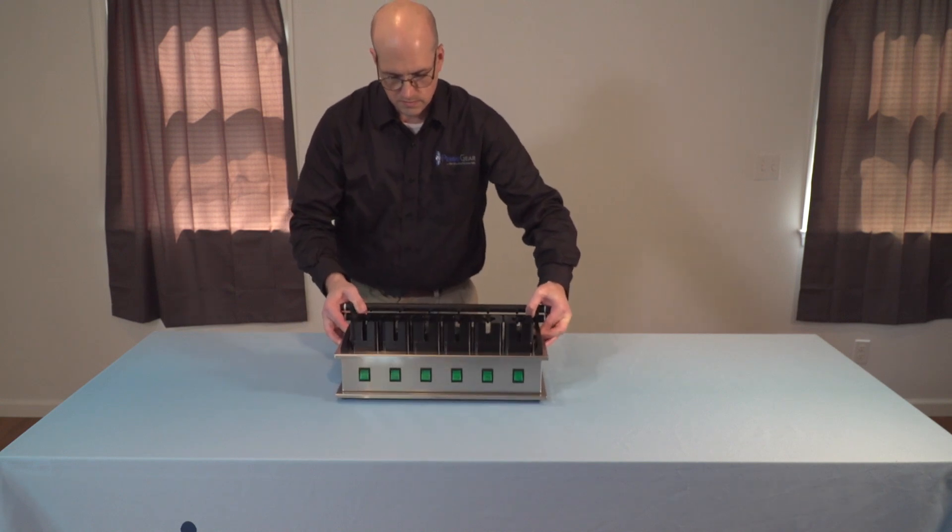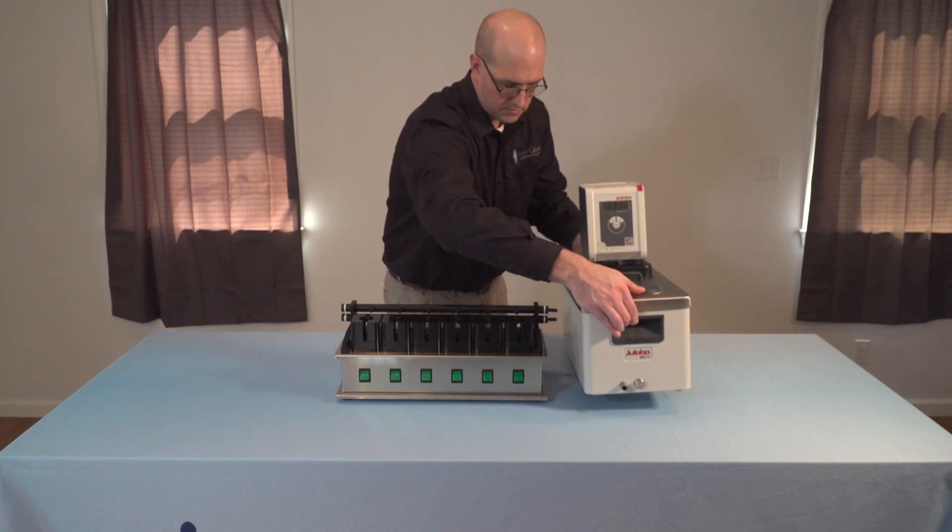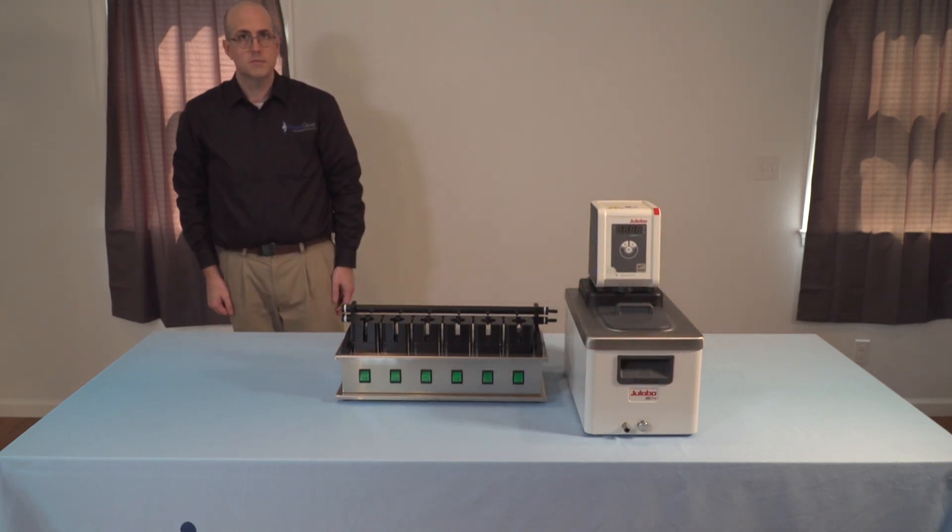The first step of the setup is to find a level bench with enough space for the stirrer and, if purchased, the circulating water bath. Place the stirrer on the bench and the water bath alongside it.